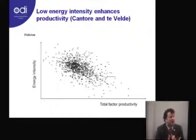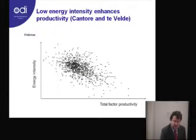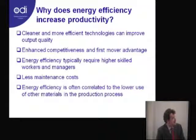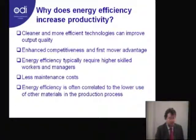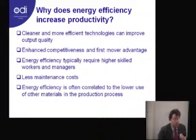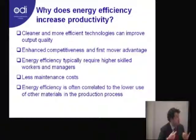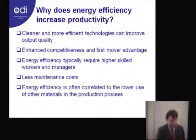What are the channels by which countries with lower energy intensity are able to improve total factor productivity? The Industrial Development Report explains some channels: cleaner and more efficient technology can improve water quality; enhanced competitiveness is a first mover advantage; energy efficiency typically requires higher skilled workers and managers; less maintenance cost; and energy efficiency is often correlated with lower use of other materials — if you use less water in production, you also need less energy to process that water.